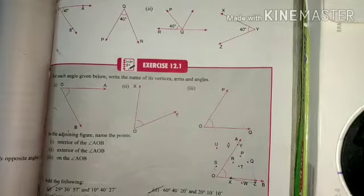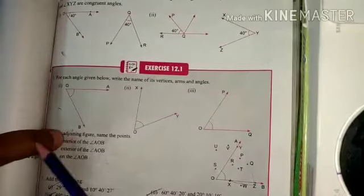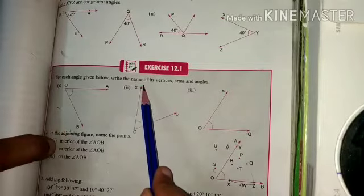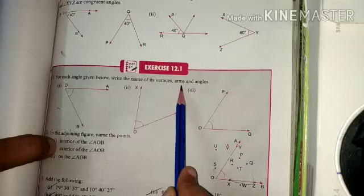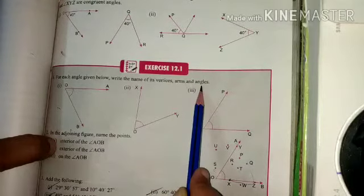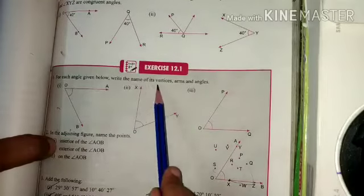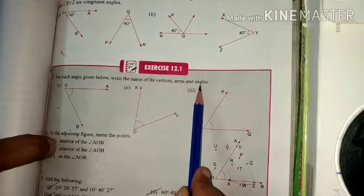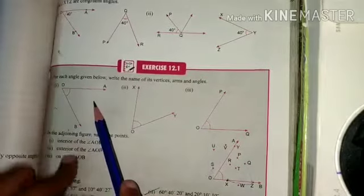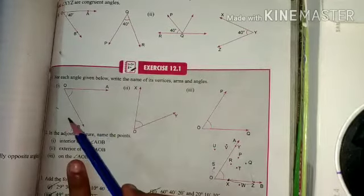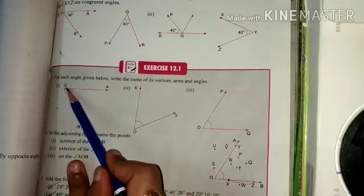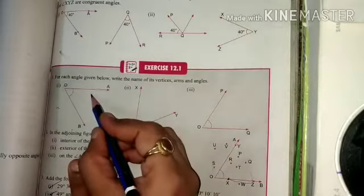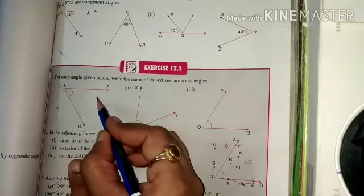Our first question is: for each angle given below, write the name of its vertices, arms, and angles. Here they said we have to write the name of the vertices, arms, and angles. So in the first case, we know that the vertex is a point where the arms meet. So here, vertex...